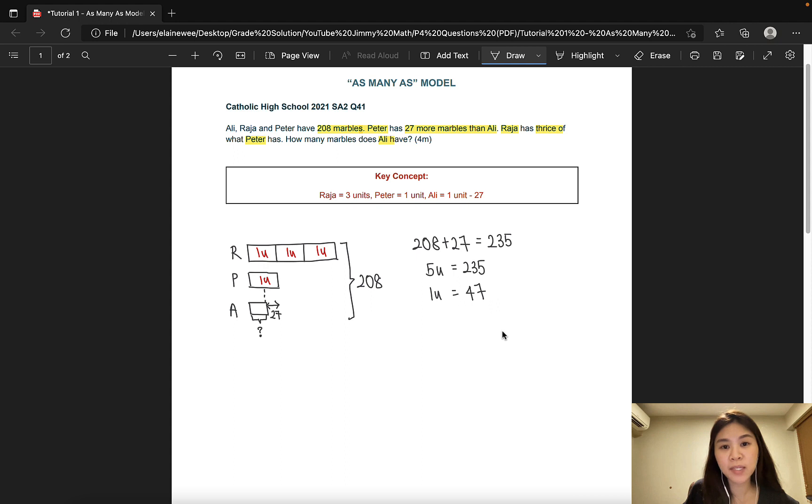How many marbles does Ali have? Ali has 27 less than 1U. So let's go ahead and subtract 27 from 47. And the answer would be 20. And that's the solution to this question.